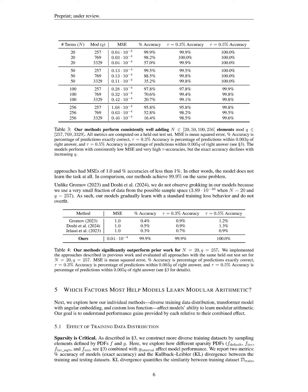In this section, we detail our model training and evaluation process for summing n elements mod q, experimenting with various parameters and using prime moduli relevant to cryptography. Our transformer models achieved near zero mean squared error and approximately 100% accuracy within a 0.5% margin, demonstrating effective learning of modular addition, significantly outperforming prior approaches.